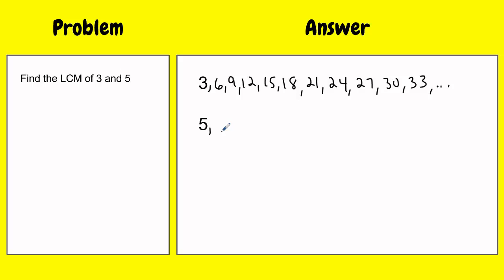Similarly, I'll do the same for 5. 5, 10, 15, 20, 25, 30, 35, 40, and I can continue that list, counting my 5's. These are all multiples of 5. This is 5 times 1, 5 times 2, 5 times 3, 5 times 4, and so on.